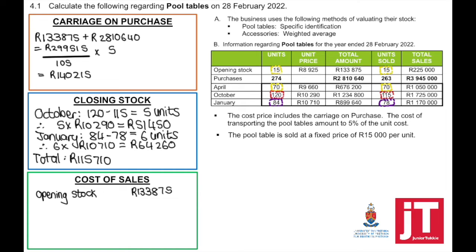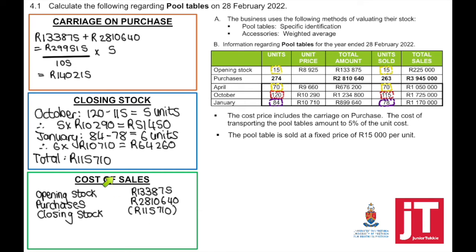To calculate cost of sales, it is opening stock plus purchases minus the closing stock we just calculated. Make sure you use your answer from the previous question when calculating cost of sales.